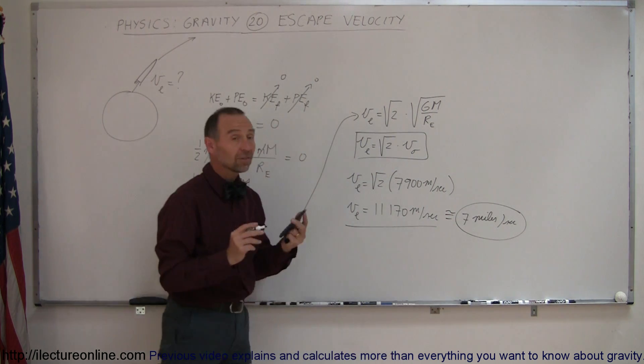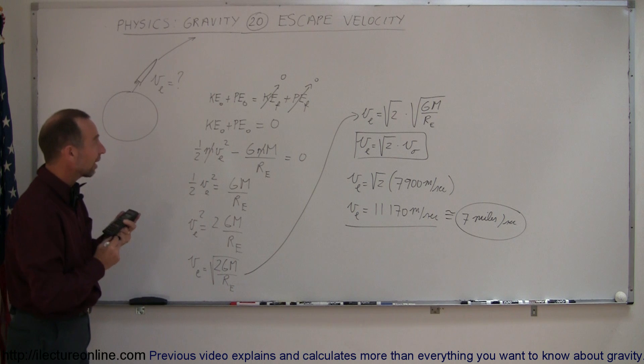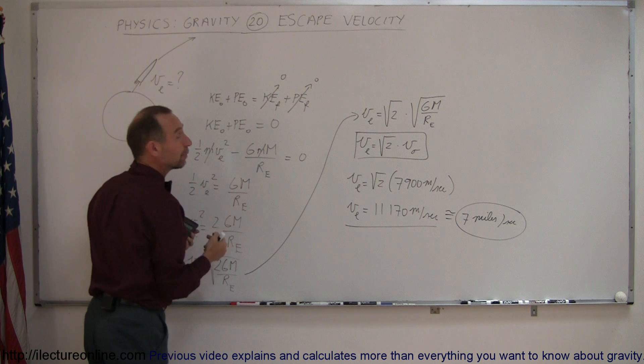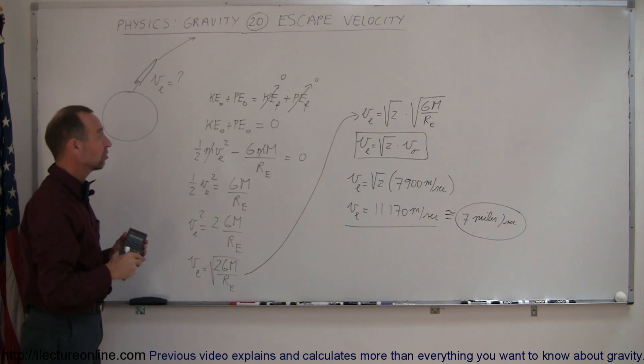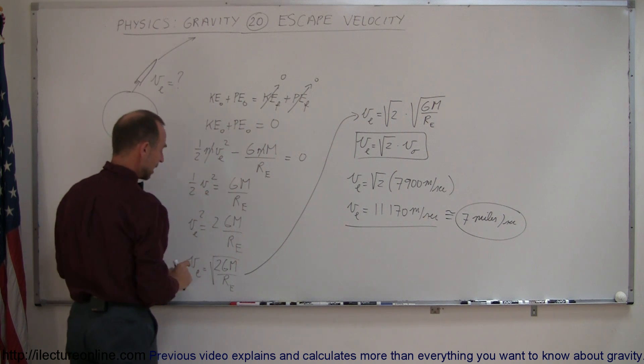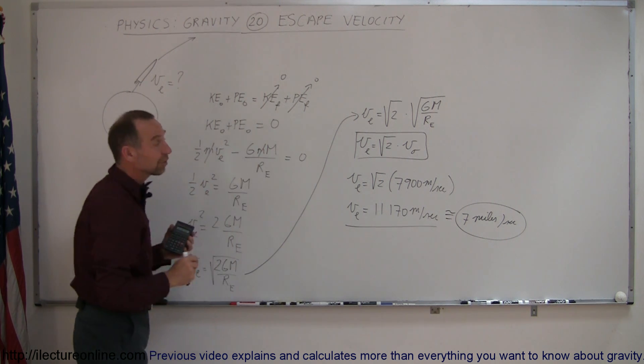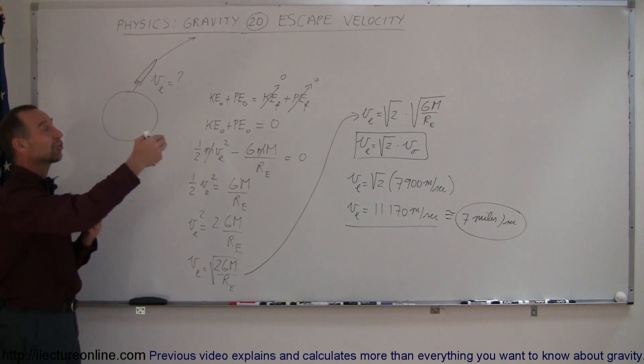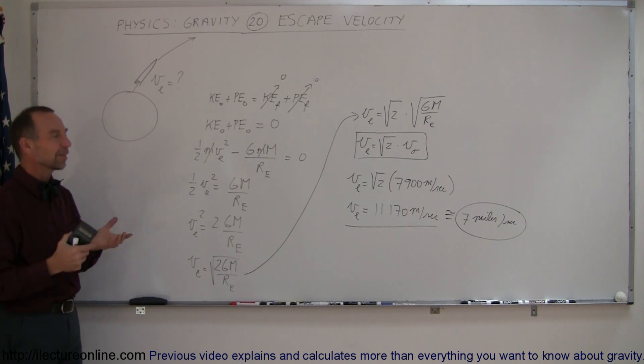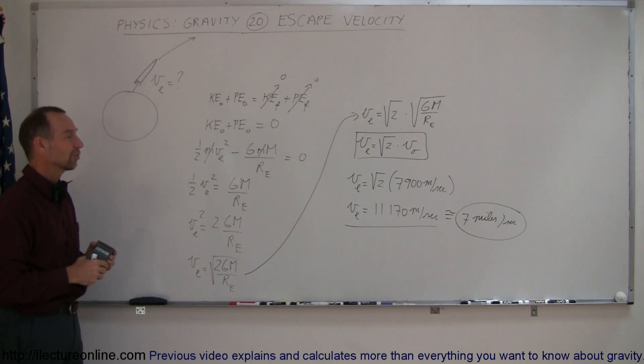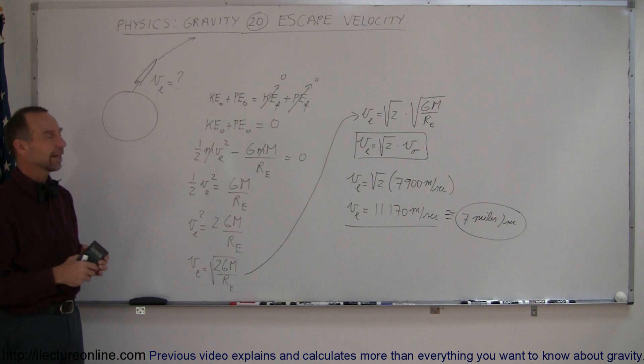So now you can see how we calculated escape velocity. We assume that at the very end, there would be no kinetic energy left. And of course, we would reach infinite distance, meaning potential energy is zero. That means we set the initial kinetic energy equal to the final potential energy. And that means escape velocity is the square root of two times the orbital velocity, about 7 miles per second for the Earth. By the way, if you want to get away from the Sun, if you leave the surface of the Sun, you would need a speed of about 642 miles per second. So you see, the bigger the object, the greater the escape velocity needs to be. But here's a good example of how to calculate that.